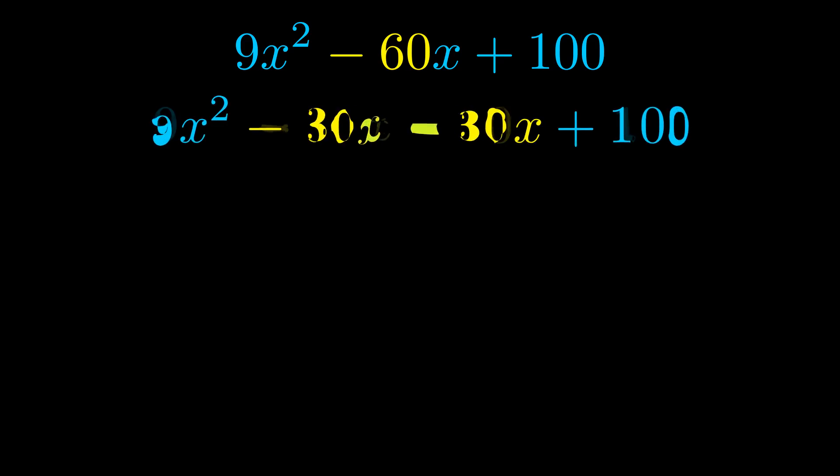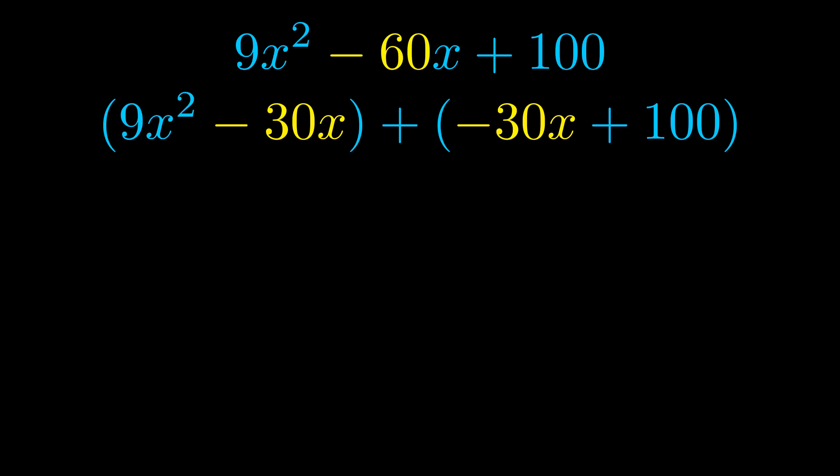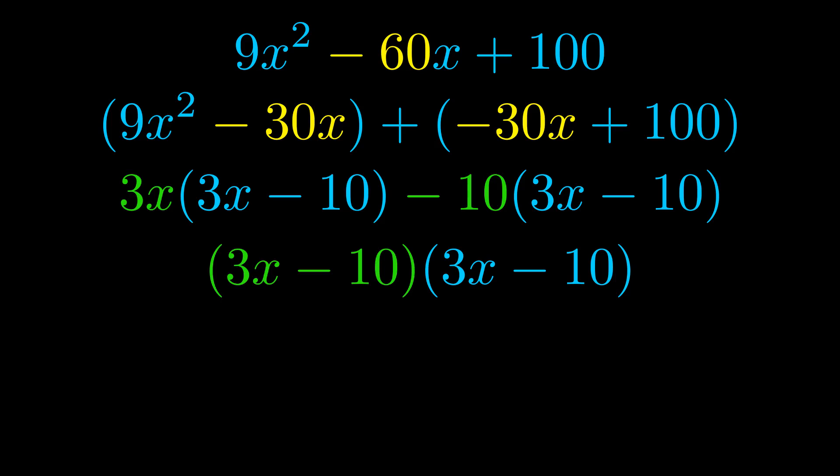Once we've done this, we go ahead and we put parentheses around the first term and the last term, and we do that so that we can take the greatest common factor out of both terms. We can see the greatest common factor is now outside in green. Notice also how what remains inside of the parentheses is the same in both cases. The blue values are the same.